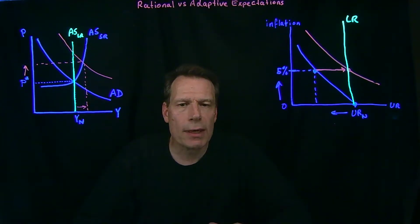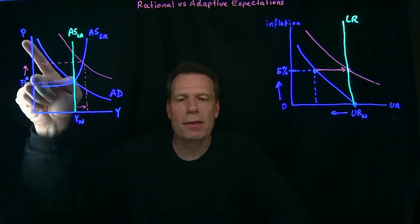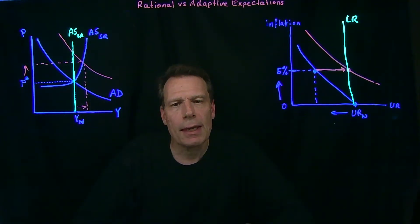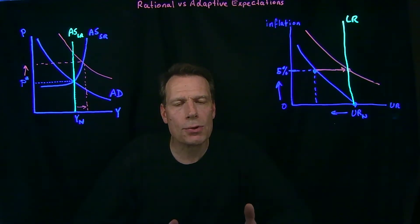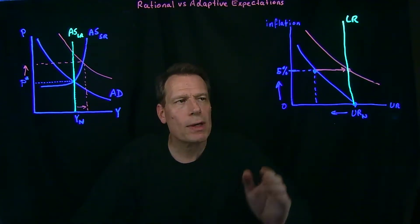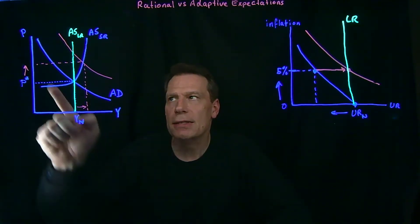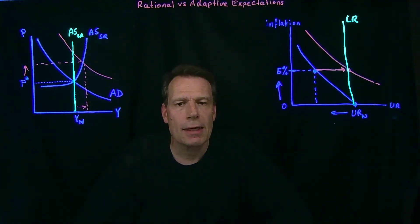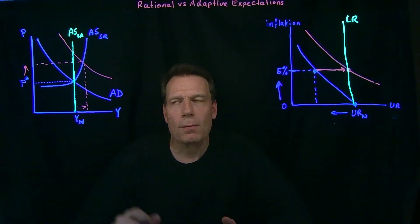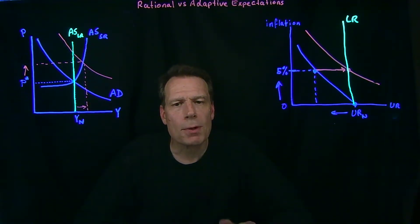It turns out that there's a way of deriving the aggregate demand and aggregate supply graph with inflation rather than the price level measured on the vertical axis. That version of the curves allows for an easier interpretation that includes the role of expectations about inflation the way that we talked about them in the Phillips curve. For that reason, the version of the aggregate demand and aggregate supply graph that has inflation on the vertical axis is the preferred version among macroeconomists. We developed the graph with the price level on the vertical axis because it was a more natural stepping stone as we developed the material.